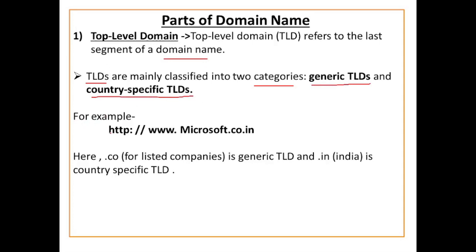For example, http://www.microsoft.co.in — यहाँ पर आपका top level domain क्या है? .co.in. Here, .co is listed for companies। And .in क्या specify कर रहा है — यह country-specific top level domain है जो specify करता है कि यह India की company है।